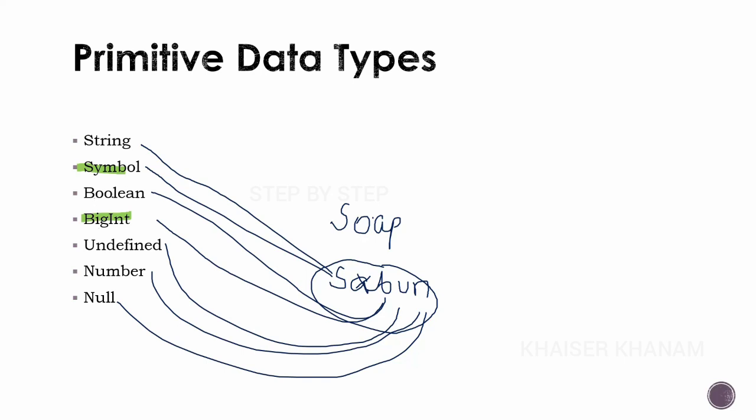So: string, symbol, boolean, bigint, undefined, number, and null. These are the seven primitive data types present in JavaScript.